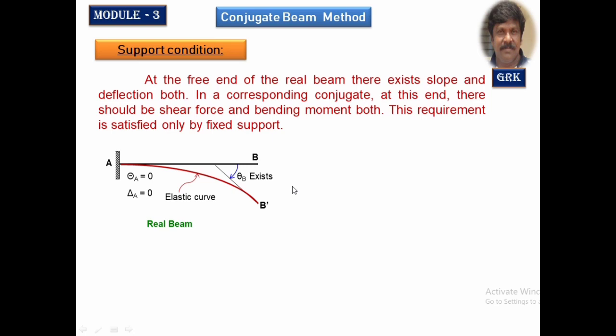At the free end, slope exists — you draw a tangential line to the elastic curve, and the angle measured with respect to the original axis of the beam is the slope. Deflection also occurs as B shifts from B to B dash. As you come very close to the support, both slope and deflection become zero — they do not exist at the fixed support.